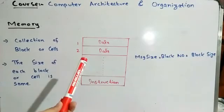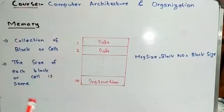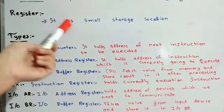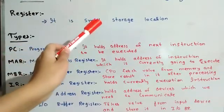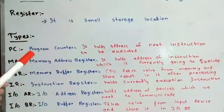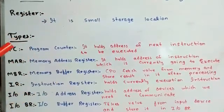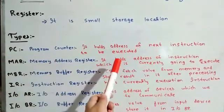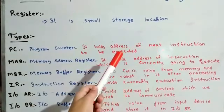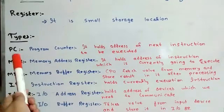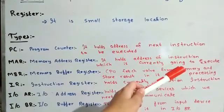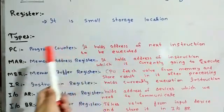When execution is performed, the data required is also provided from main memory. Now we will discuss registers and their types. A register is a small storage location where operands and values are stored. First, PC — Program Counter — which holds the address of the next instruction currently going to be executed. Its address will be in the MAR (Memory Address Register).